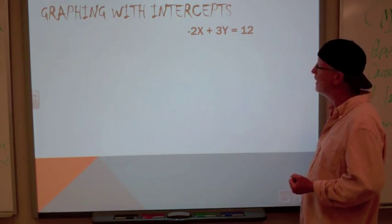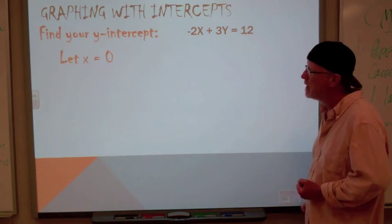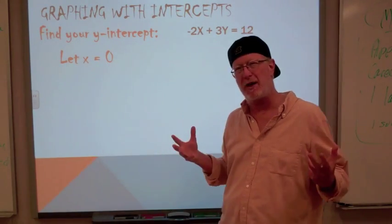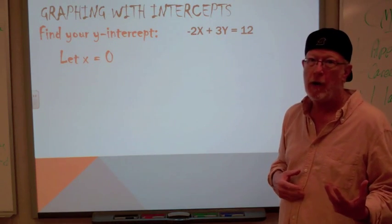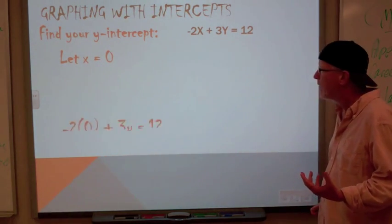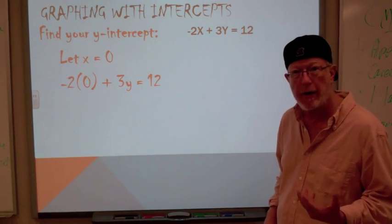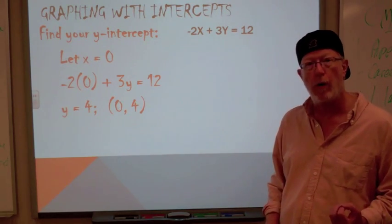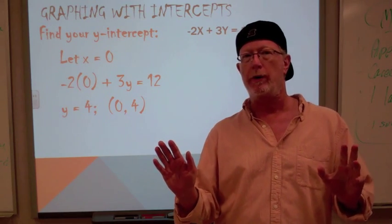The next thing we've got to do is figure out what our y-intercept is in this case. And if you remember, the y-intercept is zero, so we're going to do the same thing. We're going to plug the zero in for the x, and we're going to solve for y. And when we do that, we get negative two times zero plus three y equals twelve. And of course, we're going to divide both sides by three. That gives us four. So our y-intercept is zero and four. Now we've got two coordinates.